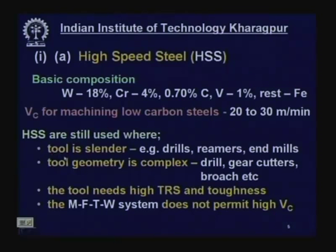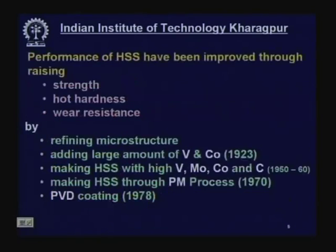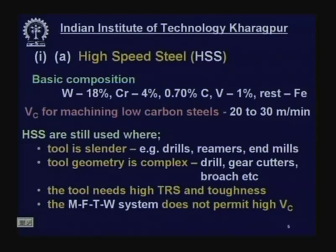High speed steel is very useful when the cutting tool is slender — like a rod — subject to a lot of bending and vibration, causing tensile and bending stresses. Modern cutting tool materials cannot sustain such stresses. Tools like long slender drills, reamers, end mill cutters of small to medium diameter are mostly made of high speed steel, though some are made from carbide.